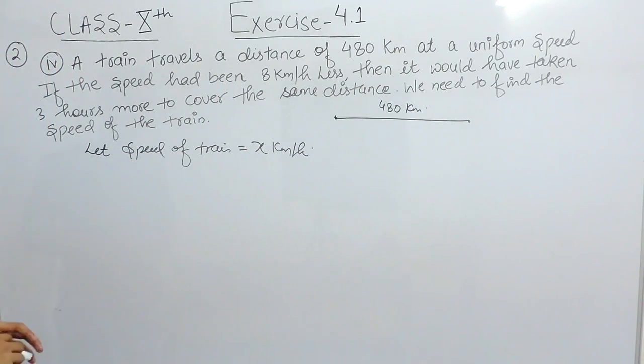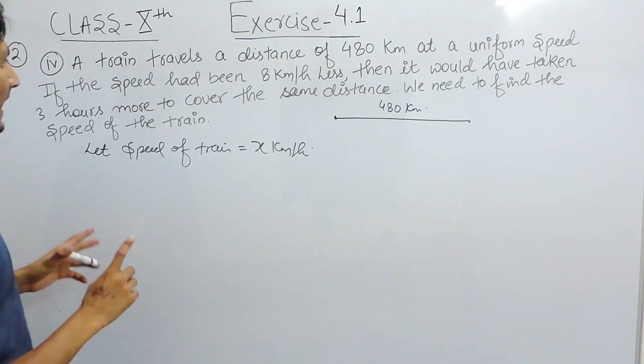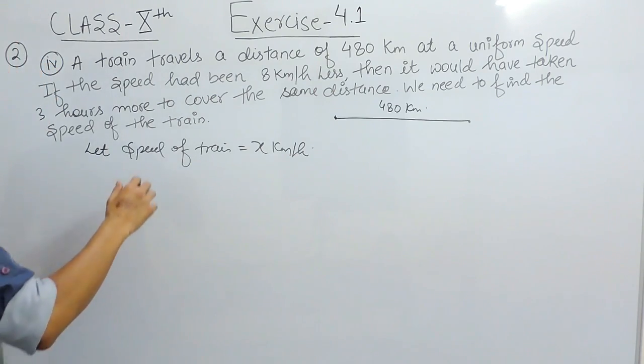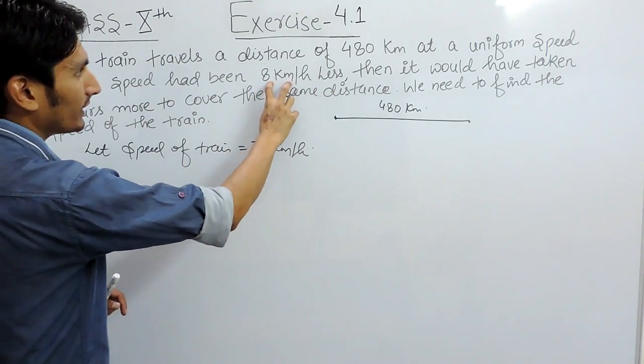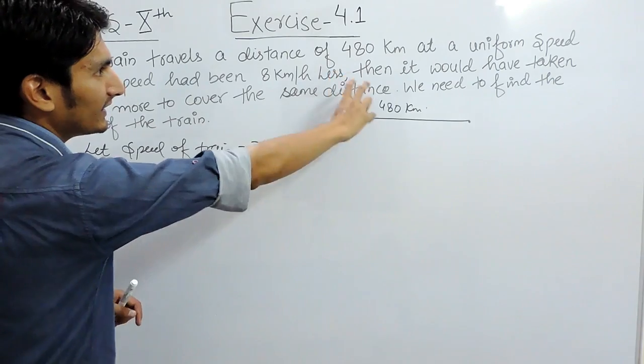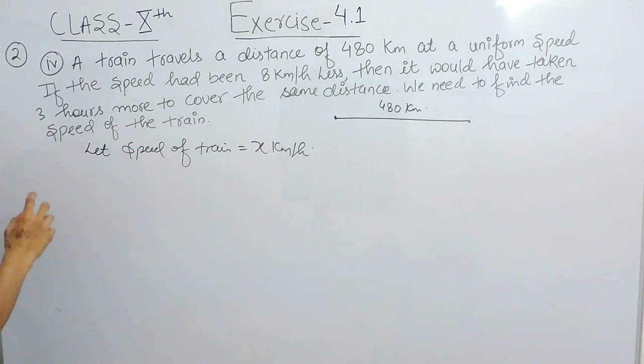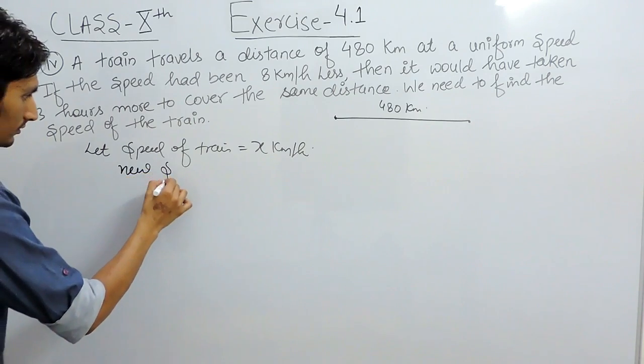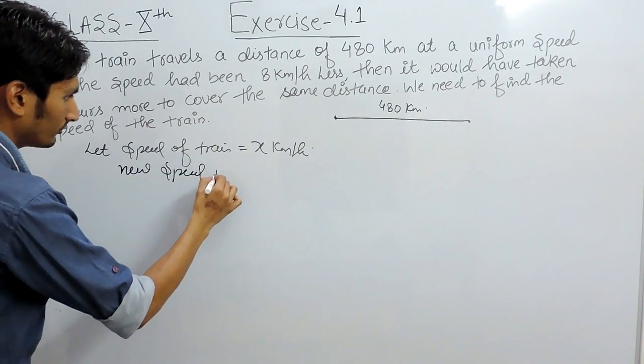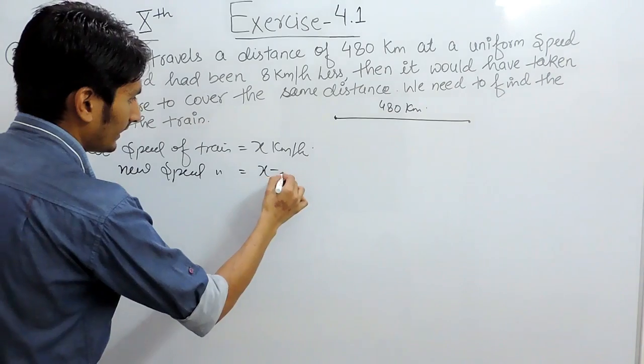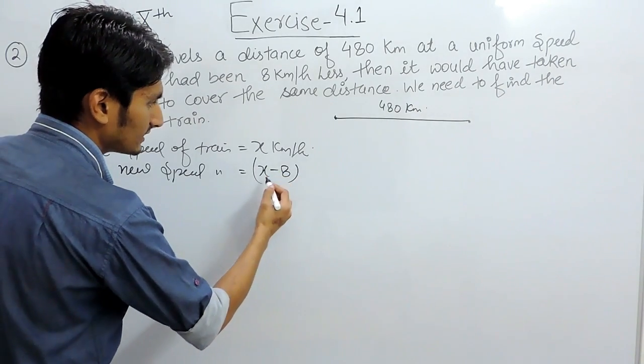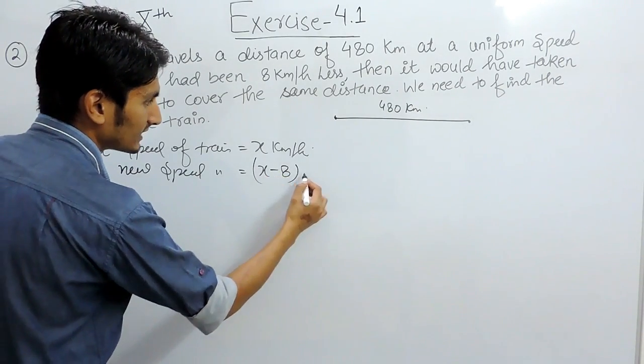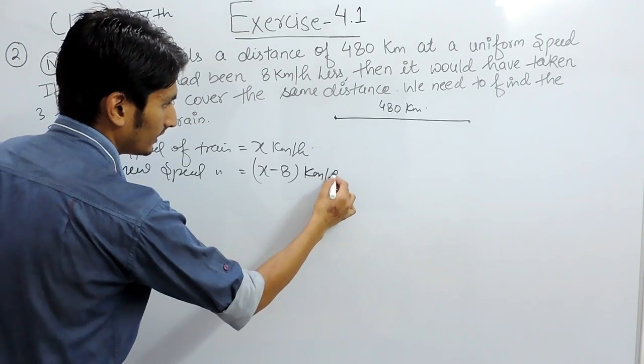It is given that if the speed had been 8 km per hour less, then it would have taken 3 hours more. So the new speed of the train must be x minus 8 km per hour.